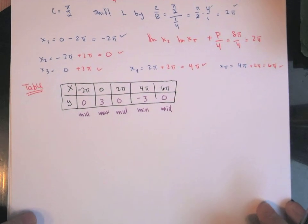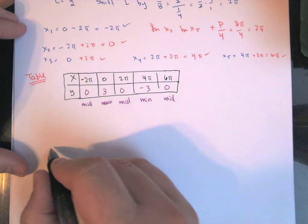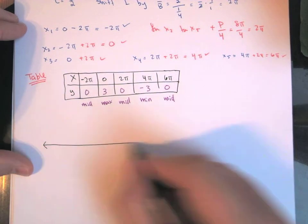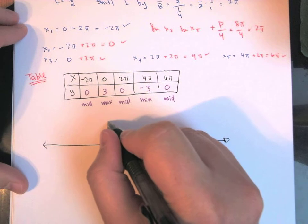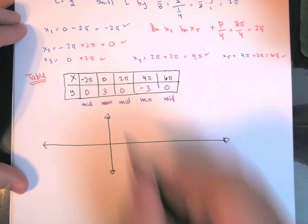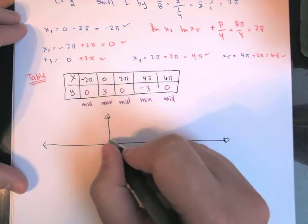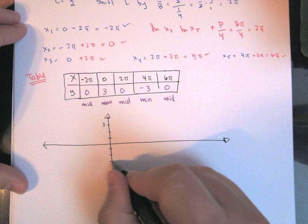And from there we can take that, we can graph it. Let's do, scale this a little bit, so one, two, three, one, two, three.